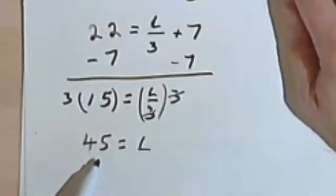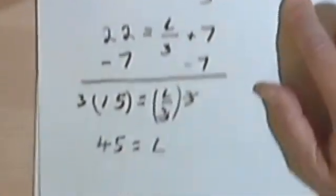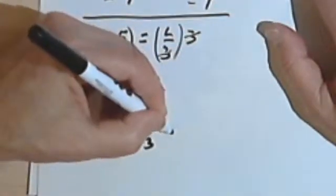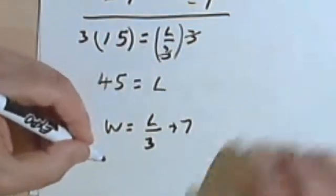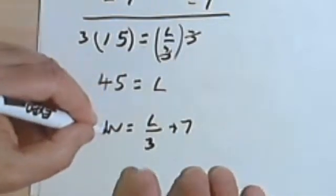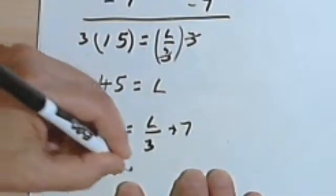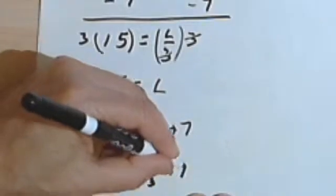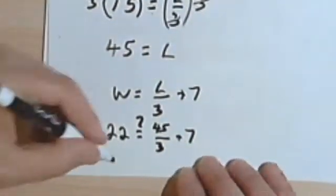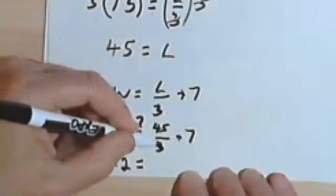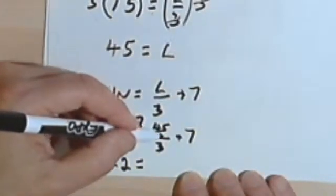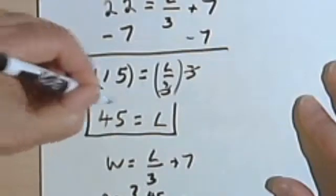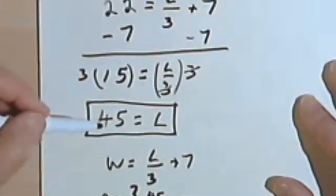So let's go see if that works. If the length is 45, remember my equation said that the width was the length divided by 3 plus 7. And now my question is, if I put a 22 in for the width and a 45 for the length, will this balance. So 22 equals 45 divided by 3 is 15. 15 plus 7 is 22. So my equation balances, and my answer will be that the length is 45 feet.